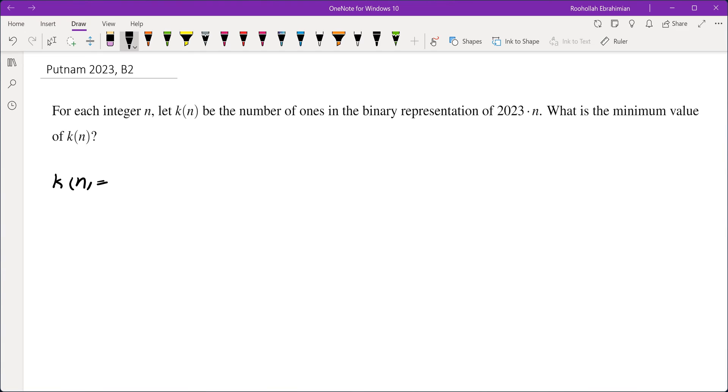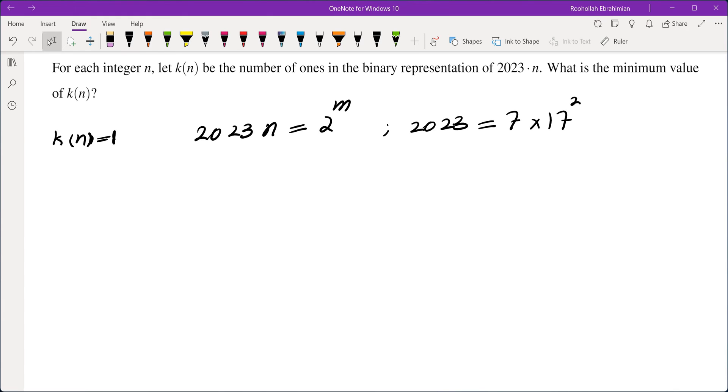let's see if k(n) can be 1. So what does it mean for k(n) to be 1? It means in the binary representation, you need to have just one leading digit of 1 and everything else must be 0. Which means 2023 times n must be a power of 2. That is clearly not possible because 2023 is in fact an odd number. In fact, the factorization is 7 times 17 squared, which is something we'll need in the next steps.